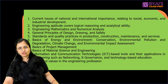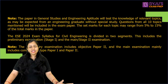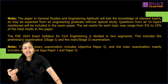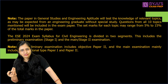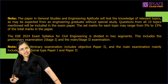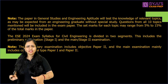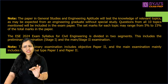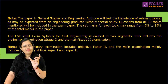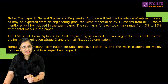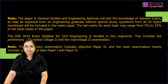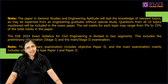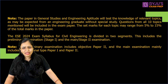For General Studies and Aptitude, the marks percentage from each of the 10 topics is roughly five to fifteen percent. I'm giving you the range because I can't say exactly that from ethics five percent will be asked or from engineering drawing ten percent, but roughly five to fifteen percent will be asked from each topic.